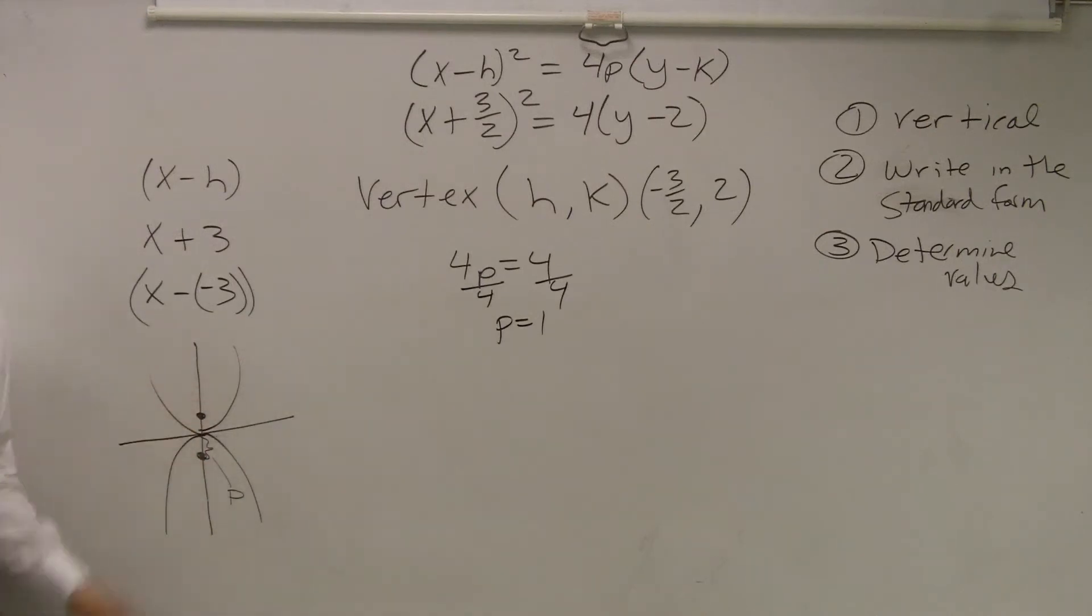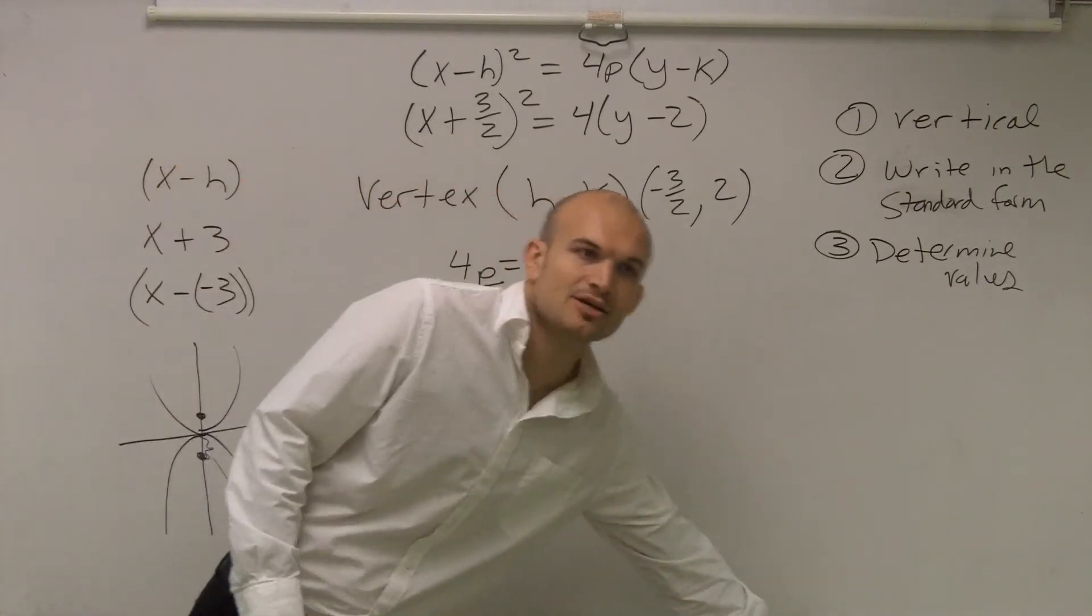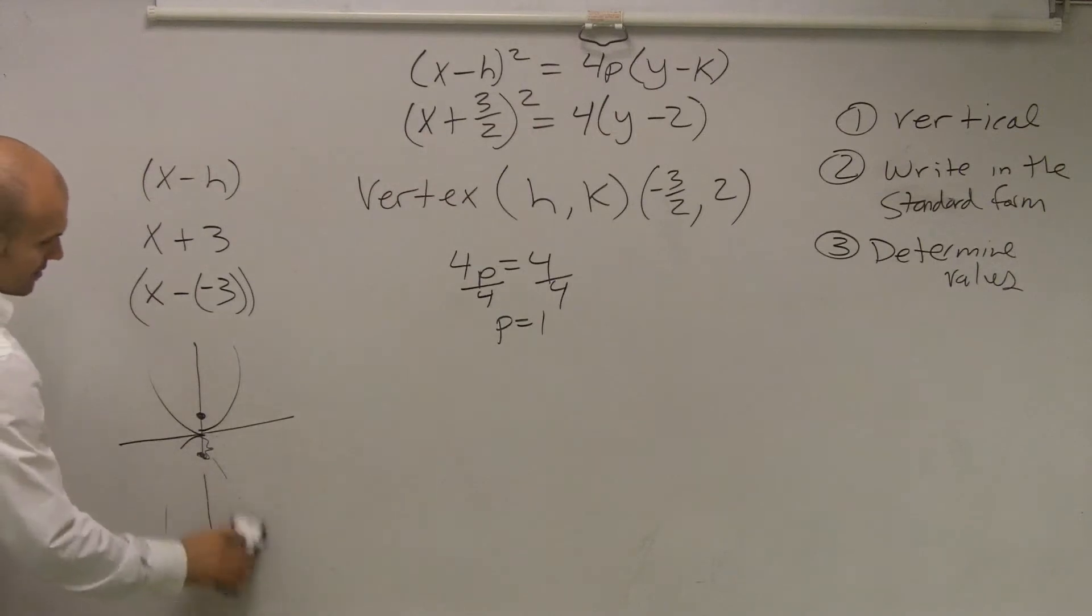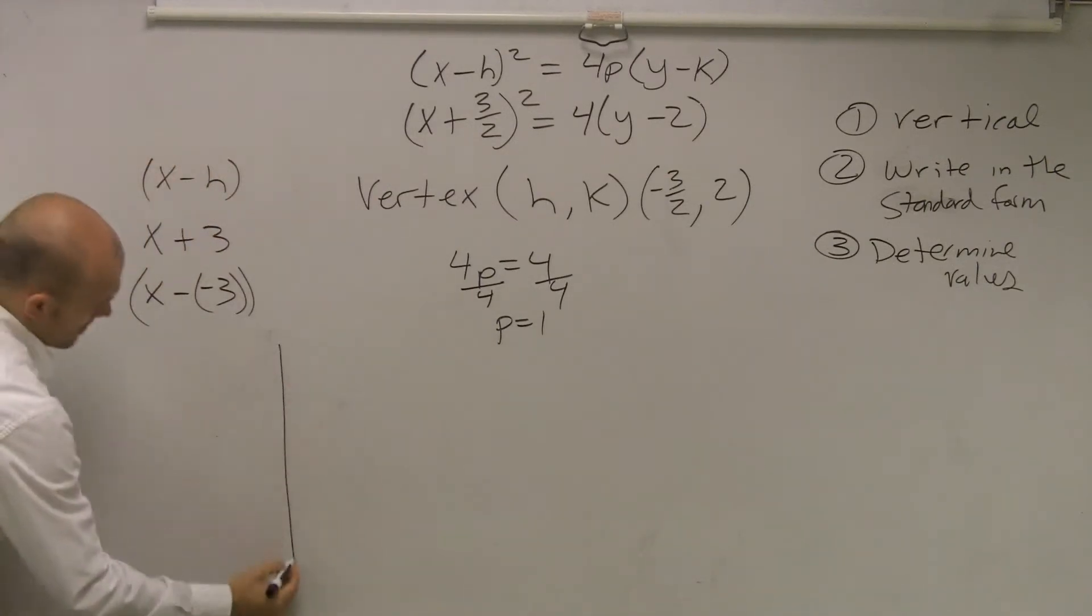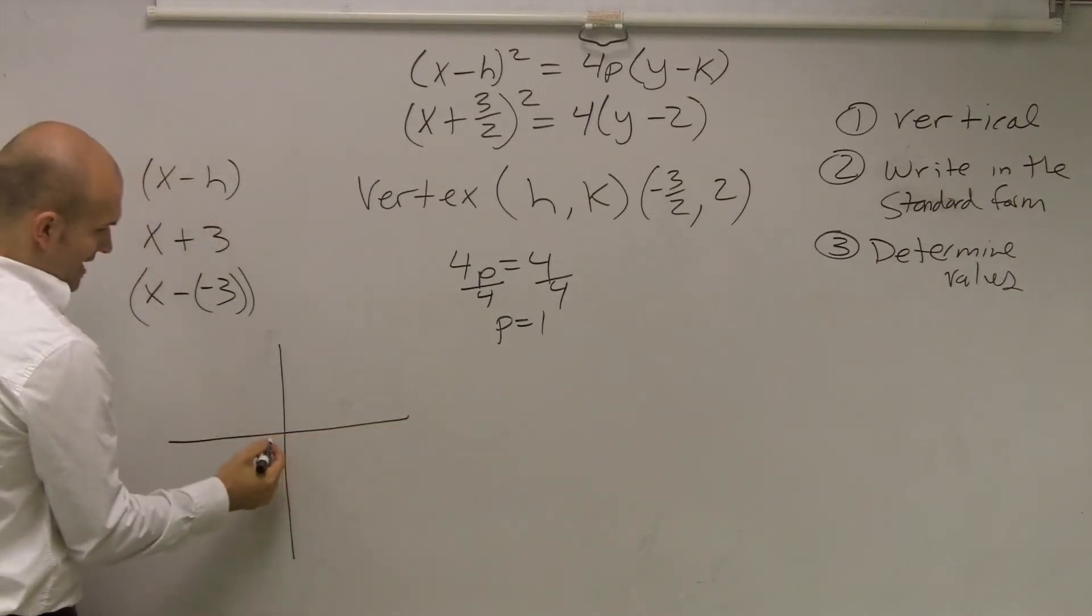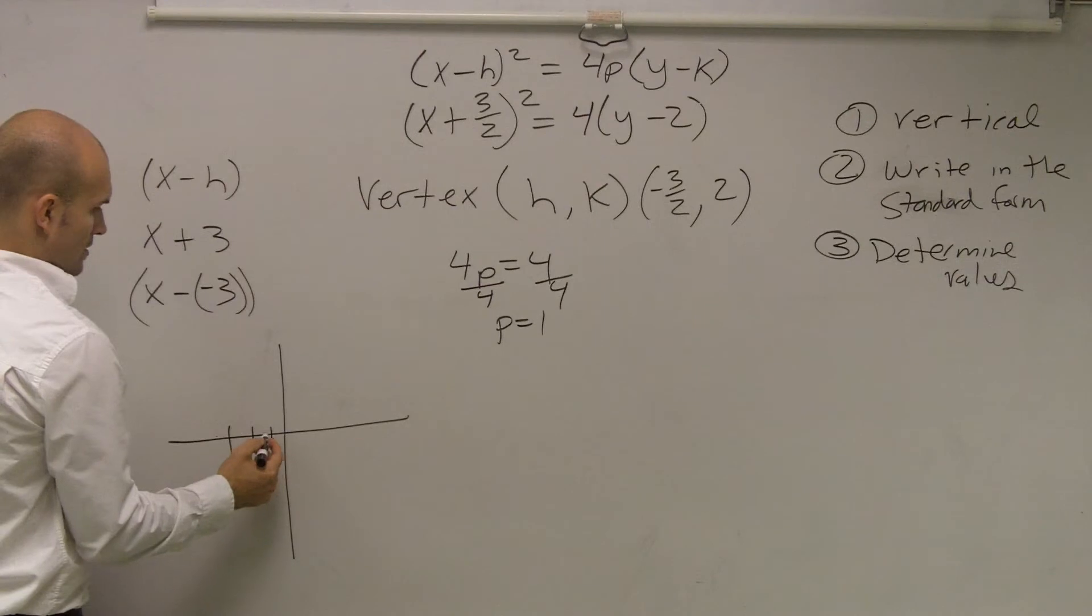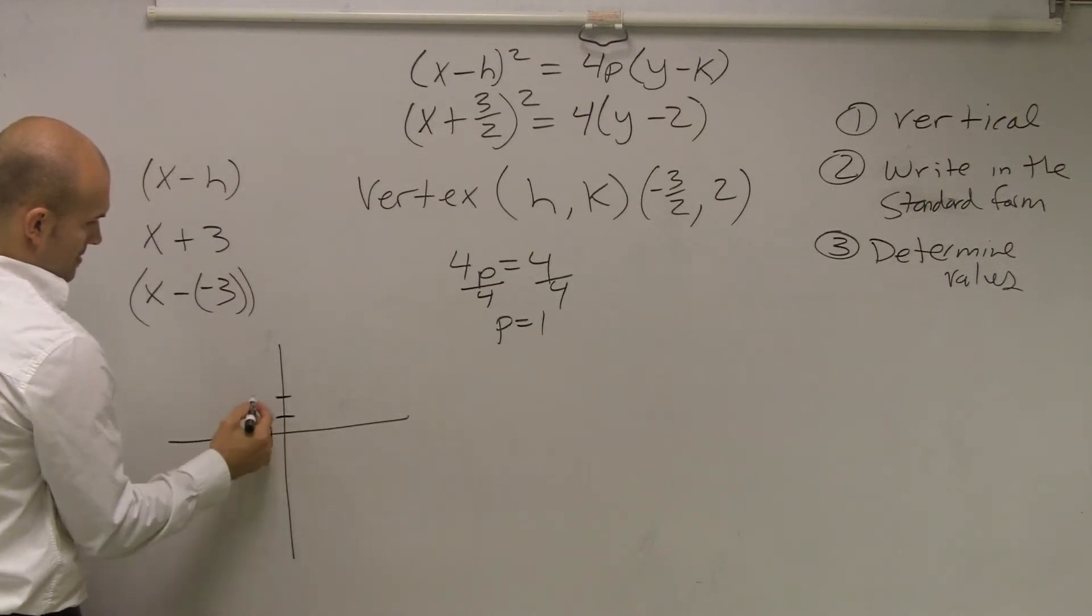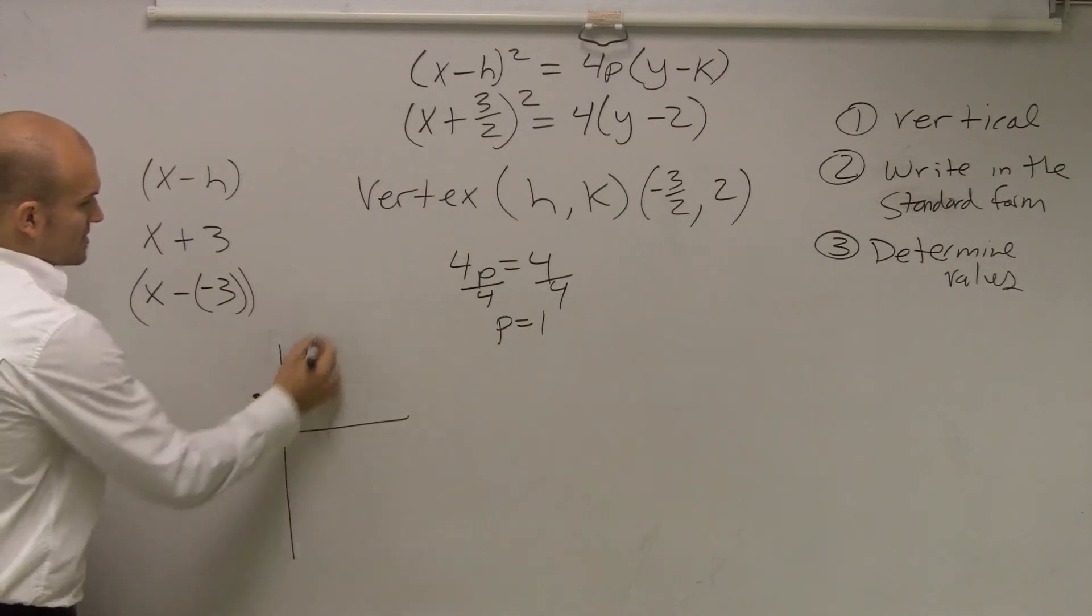So now which one of these parabolas makes sense? If p equals 1, that means the distance is going to be 1. So it can't be down 1, so therefore that is not going to be my parabola. So now at least I know what my parabola is going to look like. However, we have a different vertex. We have a vertex of (-3/2, 2), so let's write that out here real quick. So I have -3/2, and then up 2. And I know it opens upwards.